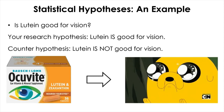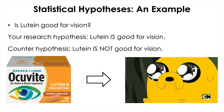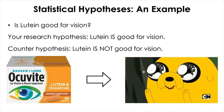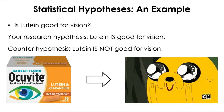You can think of the null hypothesis as a devil's advocate. The null and research hypothesis are mutually exclusive in that they both cannot be true at the same time. They are also mutually exhaustive because together they cover all the possibilities — the lutein will be either good or not good for vision. This covers all possibilities.